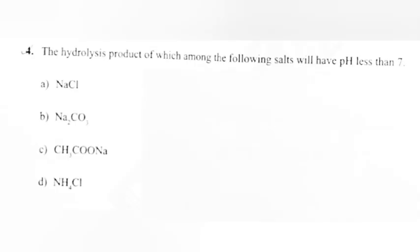Question 4: The hydrolysis product of which among the following salt will have pH less than 7. A. NaCl. B. Na2CO3. C. CH3COONa. D. NH4Cl. Answer: D. NH4Cl.